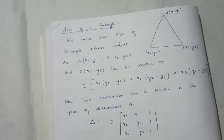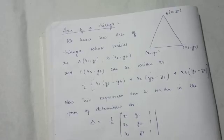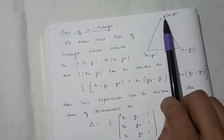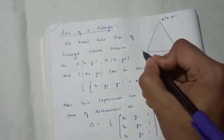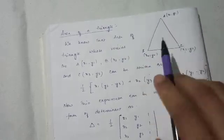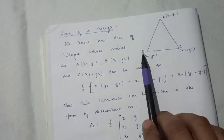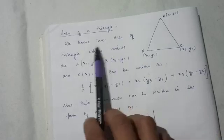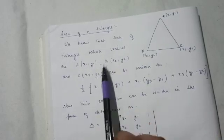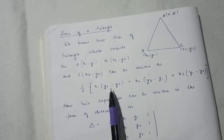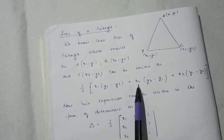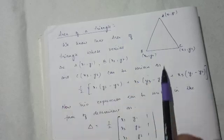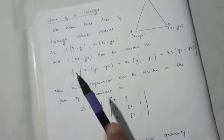The next topic in the unit 'Determinant' is about the area of a triangle. We have a triangle with vertices A(X1, Y1), B(X2, Y2), and C(X3, Y3). The area of triangle ABC can be written as: 1/2 × |X1(Y2 - Y3) + X2(Y3 - Y1) + X3(Y1 - Y2)|. This is something you have studied in Class 10.